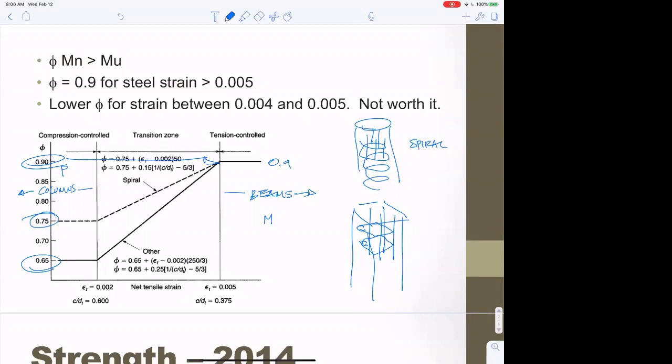The question is, when is a member a beam versus a column? It depends on how much axial load it has relative to the moment, and we determine that from the strain. In a beam, with steel down here, the strain diagram looks like this - that's 0.003 at the top, and that's the net tensile strain in the steel.